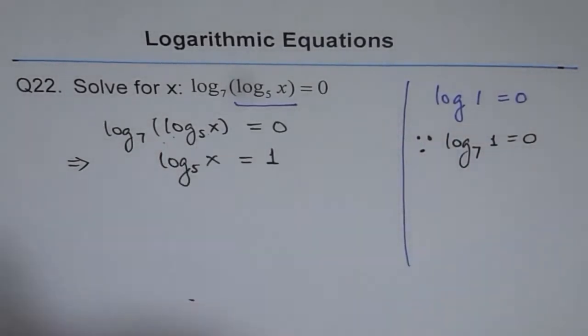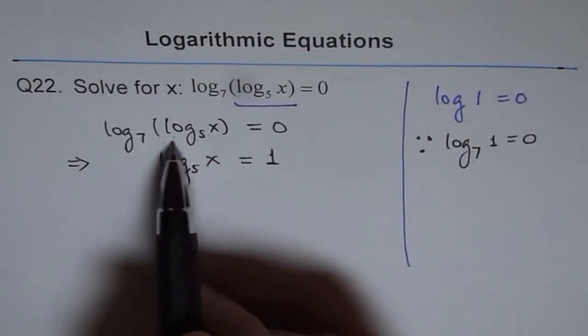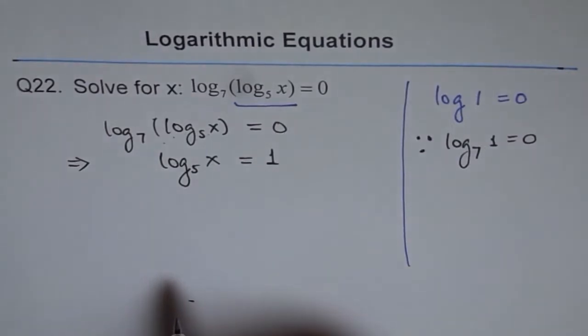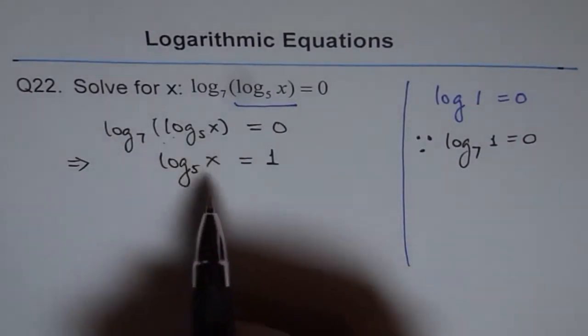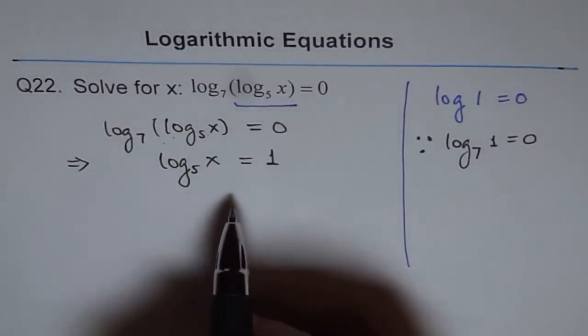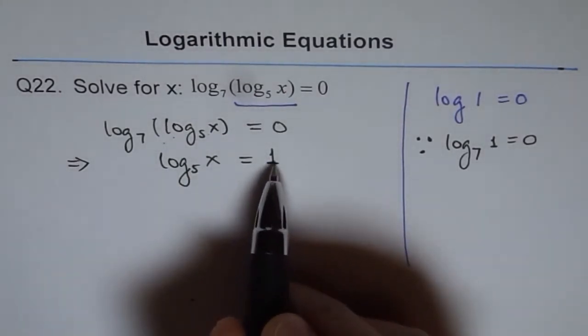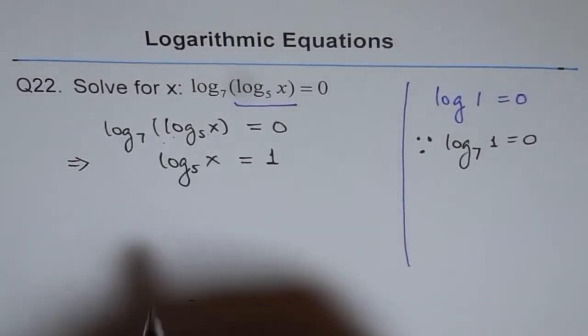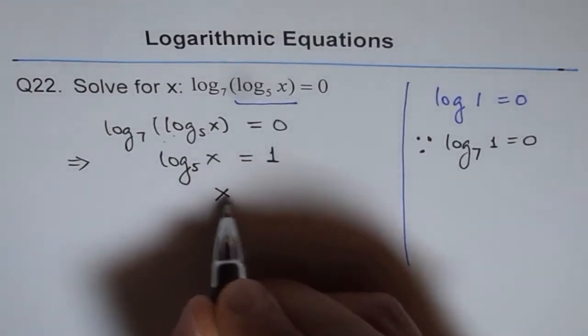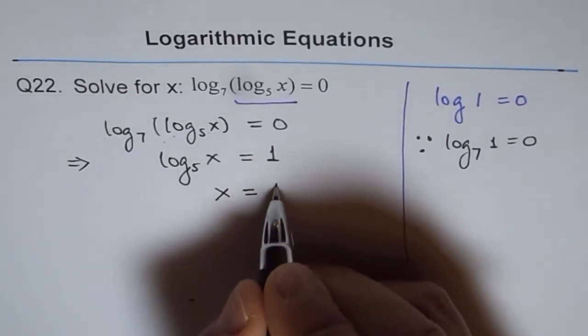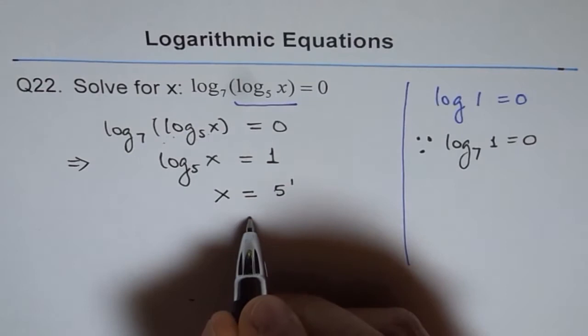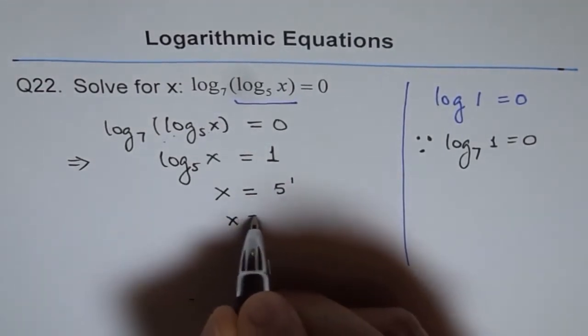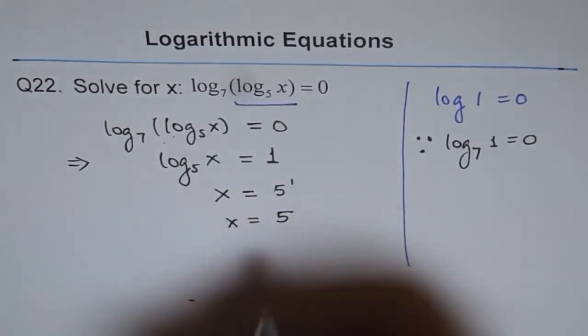Therefore, this expression should equal 1. That is our logic. From here, we can easily write down the answer. From the definition of log, 5 to the power of 1 should be x. So x equals 5 to the power of 1. That is, x equals 5. And that is our solution.